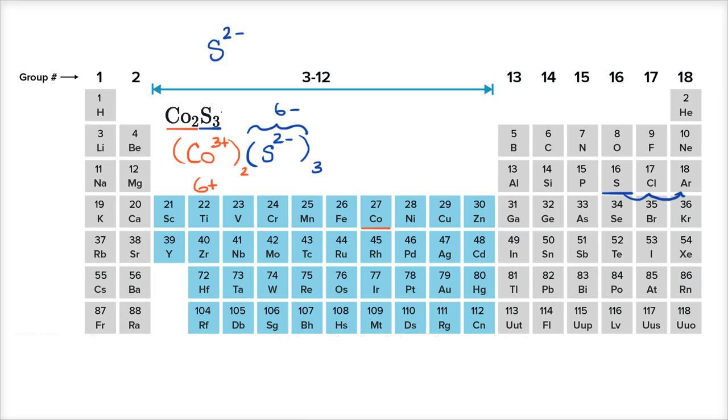We would call this ionic compound cobalt three, and you would write it with Roman numerals here, cobalt three sulfide.